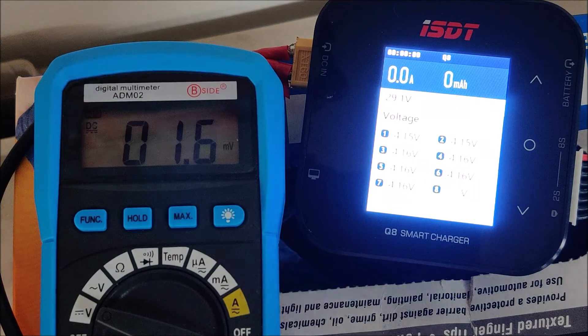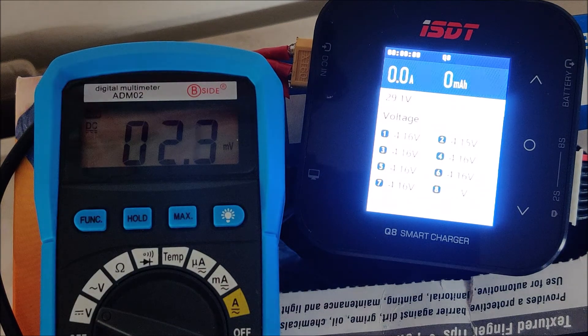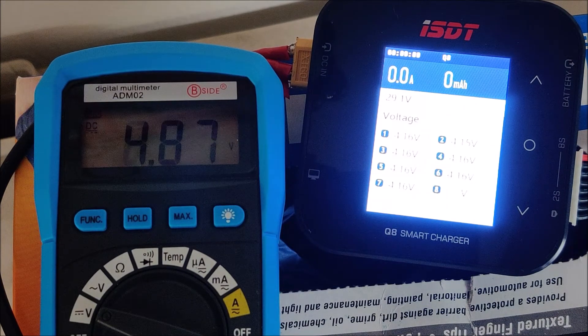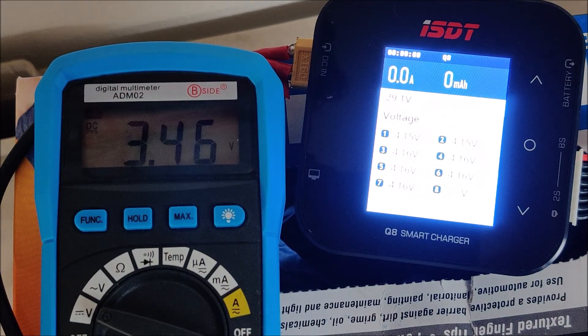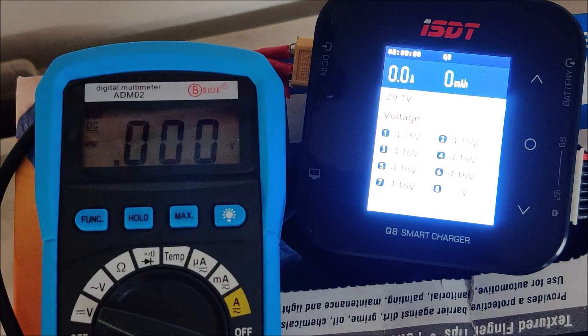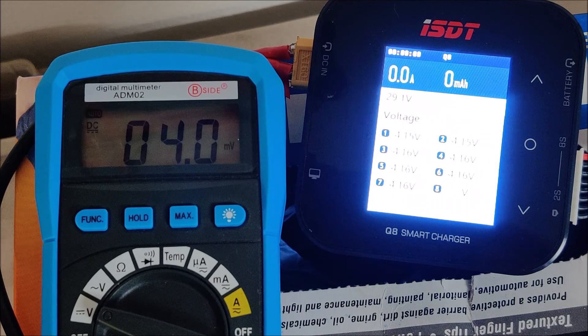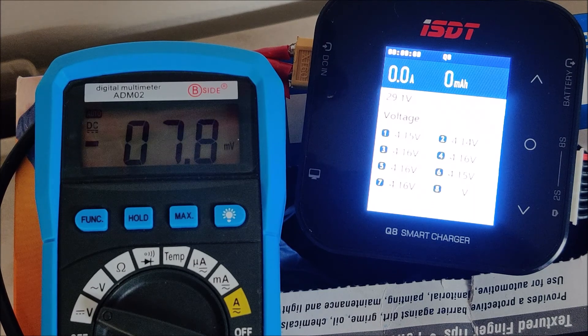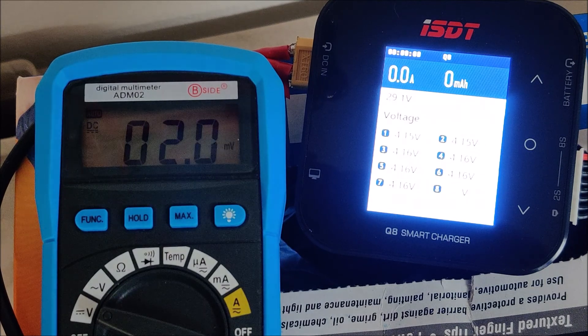Cell three, 4.16. And I have 4.15. Cell four, 4.16. And I have 4.16. Cell five, 4.16. I have 4.15. Cell six, 4.15, 4.16. And the last cell, 4.16, 4.16. So, I'm pretty happy with the balance and the accuracy of the cell voltages on the ISDT. You can see cell two just drifted to 4.14 and which is what the multimeter read as well. So anyways, that's it.